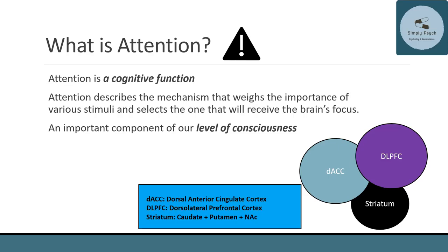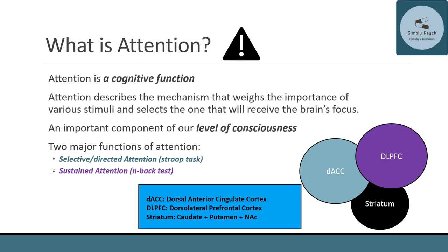We can think of attention as a component of our level of consciousness. Consciousness can be broken down into two parts: our level of consciousness — how alert, attentive, and aware we are — and the content of our consciousness, which includes substrates like emotions, language, memory, motor planning, and executive functioning. Attention is more a part of our level of consciousness. The two major functions of attention I'll discuss today are selective and directed attention, and sustained attention.